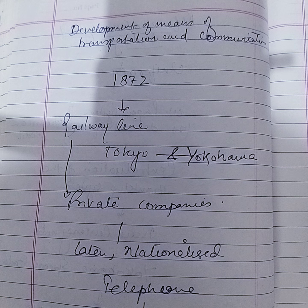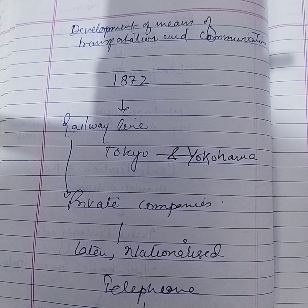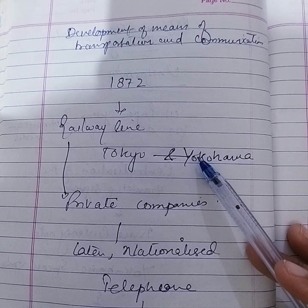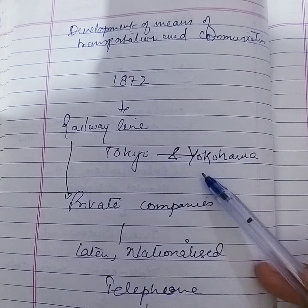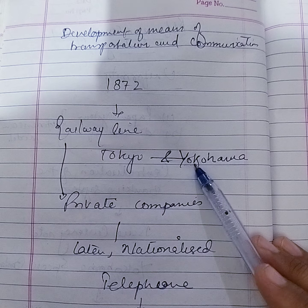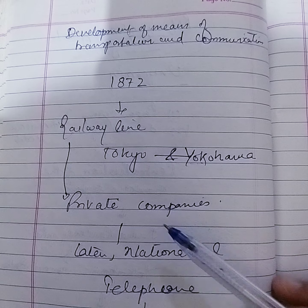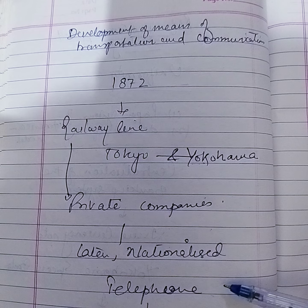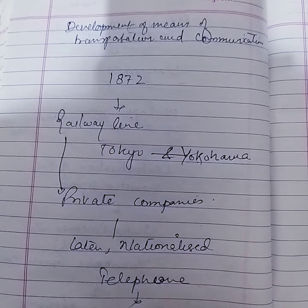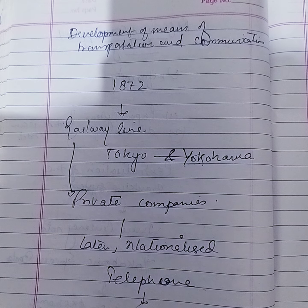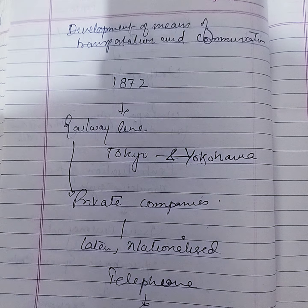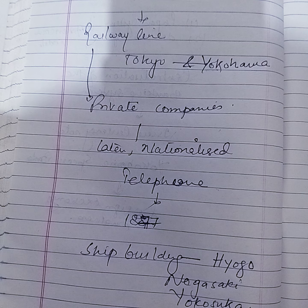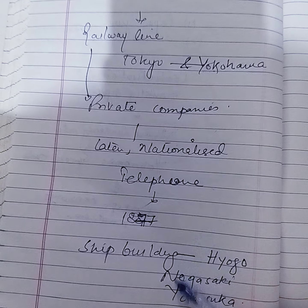The growth of the banking system promoted Japanese trade and commerce; stock exchanges and chambers of commerce were also set up. Development of industry and trade required an efficient system of transportation and communication. In 1872, the first government-owned railway line was constructed between Tokyo and Yokohama. Private companies were also given assistance to build other railways, which were later nationalized. A telephone system was introduced in 1877, and the government gave direct assistance to the shipbuilding industry. Yokosuka, Nagasaki, and Yokohama became centers of shipbuilding.